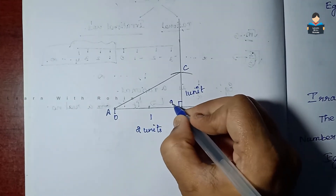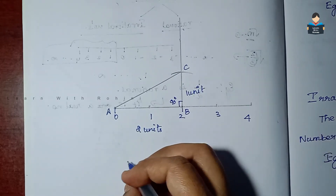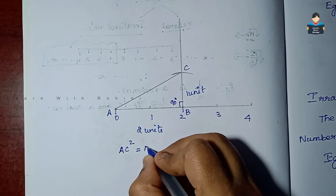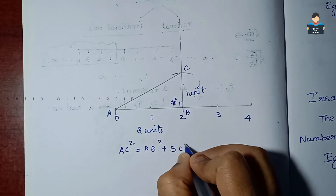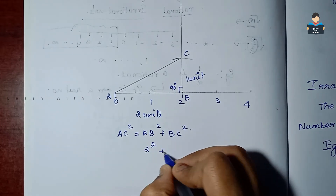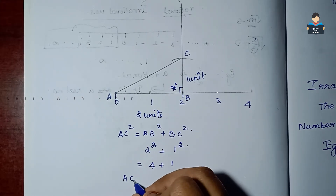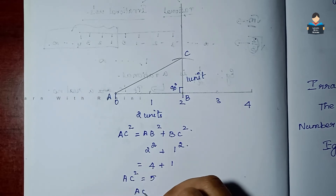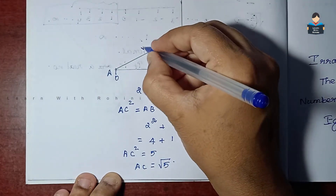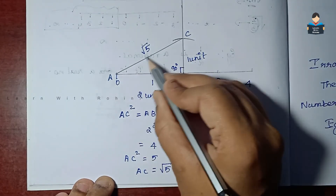We mark a 90-degree angle and draw the opposite side and hypotenuse. Using the Pythagorean theorem: AC² = AB² + BC², where AB = 2 and BC = 1. So AC² = 4 + 1 = 5, giving AC = √5. We then mark the value √5 on the number line.